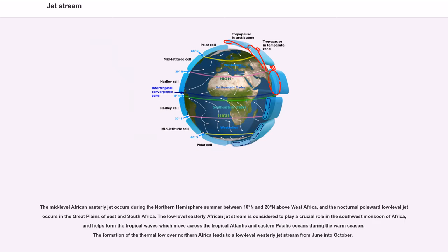The mid-level African easterly jet occurs during the northern hemisphere summer between 10 degrees north and 20 degrees north above West Africa, and the nocturnal poleward low-level jet occurs in the Great Plains of East and South Africa. The low-level easterly African jet stream is considered to play a crucial role in the southwest monsoon of Africa, and helps form the tropical waves which move across the tropical Atlantic and eastern Pacific Oceans during the warm season. The formation of the thermal low over northern Africa leads to a low-level westerly jet stream from June into October.